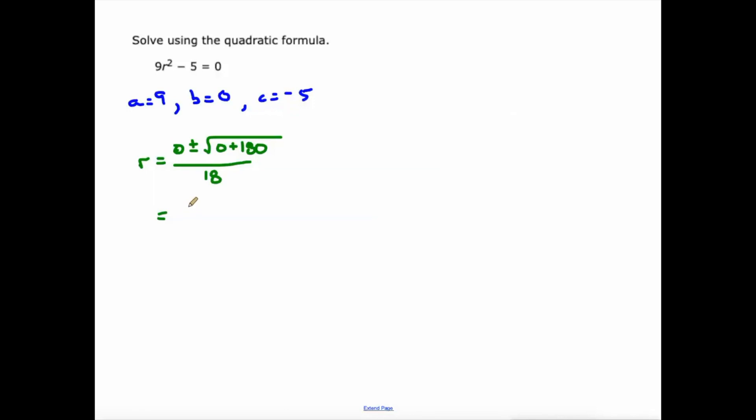So what do we really have here? We have the square root of 180 over 18, or actually, plus or minus the square root of 180 over 18. So the square root of 180 divided by 18 is 0.75. And the negative of the square root of 180 divided by 18 is negative 0.75.